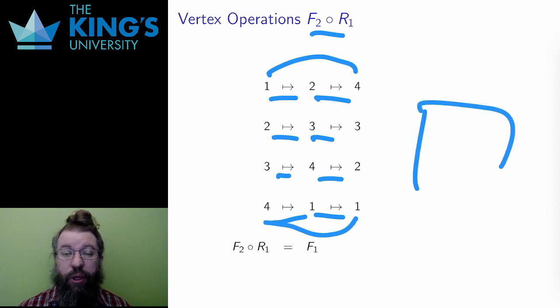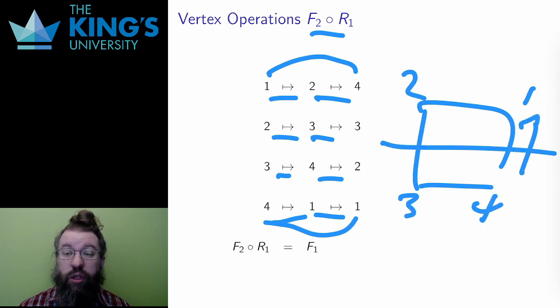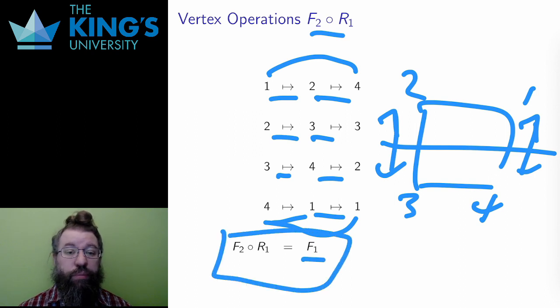Again, out of the eight possibilities, which one is this? Well, this is the reflection over the horizontal line, which I called F1. F2 composed R1 is F1. This is another calculation in the group, and a good demonstration of the non-commutativity of this group, because when I change the order, I get a different result.